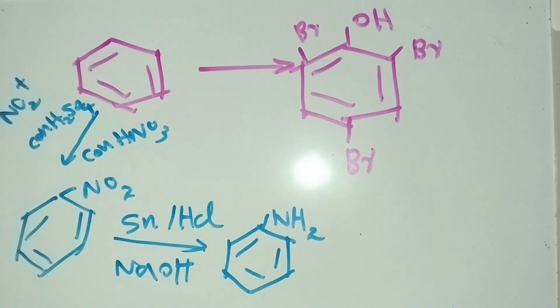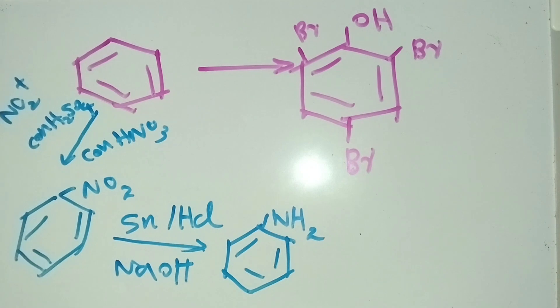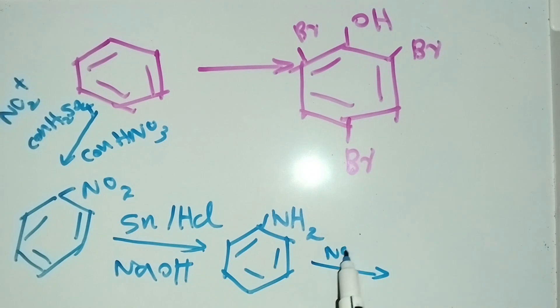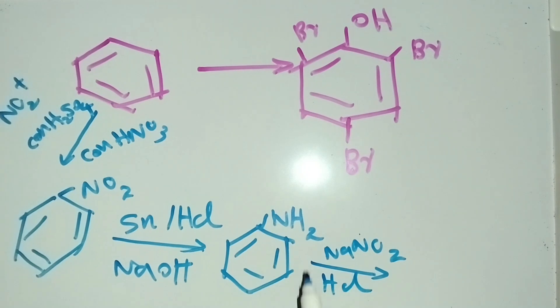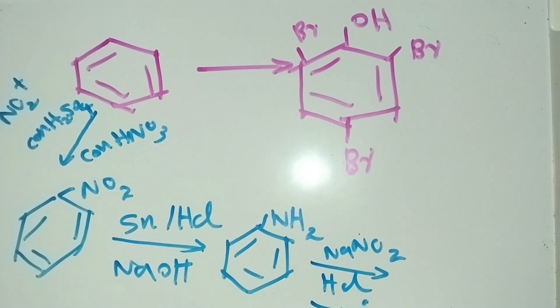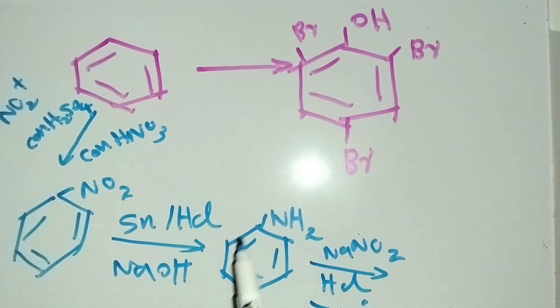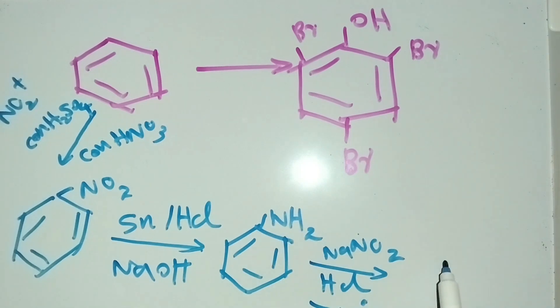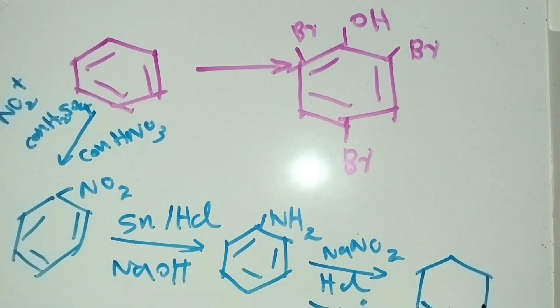After making aniline, we have to convert this aniline into phenol. For that, we have to use sodium nitrite and HCl below 10 degrees Celsius. In this condition only, we can convert aniline into phenol.